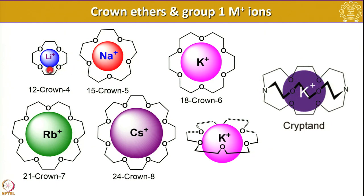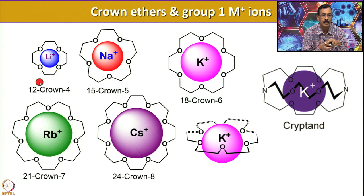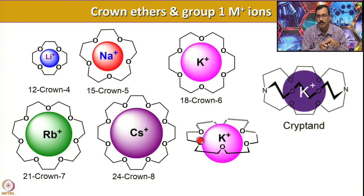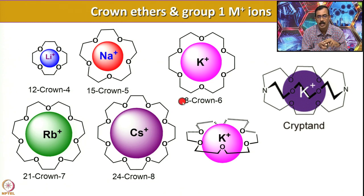For example, to stabilize lithium ion the ideal size is 12-crown-4, and to stabilize a sodium cation the ideal size is 15-crown-5. Similarly for potassium we need 18-crown-6, for rubidium we need 21-crown-7, and for cesium we need the slightly larger 24-crown-8. One can see how the crown ether encapsulates a cation, and the shape of the crown ether almost looks like a crown — hence the name.